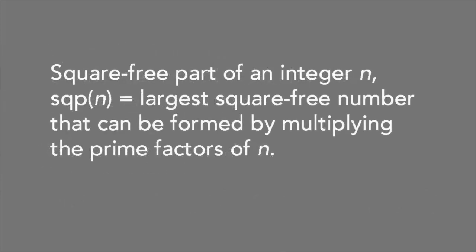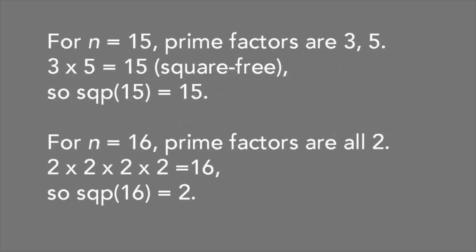The second concept we have to know about is the square-free part of an integer n, denoted by SQP of n. This is the largest square-free number that can be formed by multiplying the prime factors of n. For example, for n equals 15, the prime factors are 5 and 3, and 3 times 5 equals 15, a square-free number. So the square-free part of 15 equals 15.